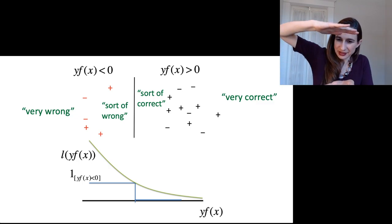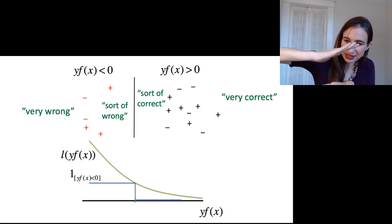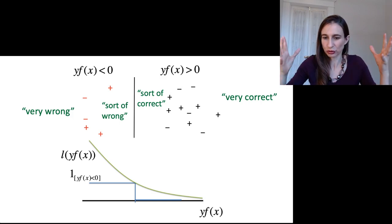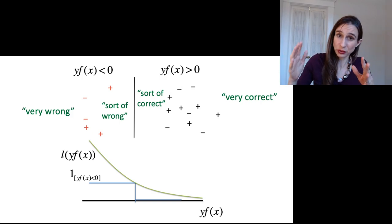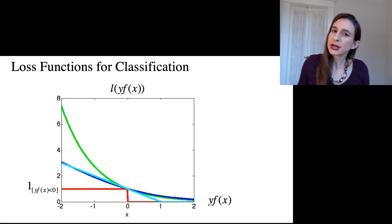It's like crunching something down where you hope that if you crunch the loss down, the misclassification error is below it. So hopefully you'll crunch that down too. And this actually works. It actually really works in practice. So if you minimize these loss functions, you minimize the misclassification error.